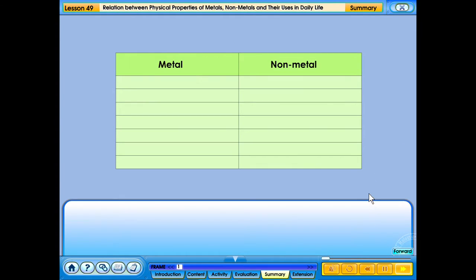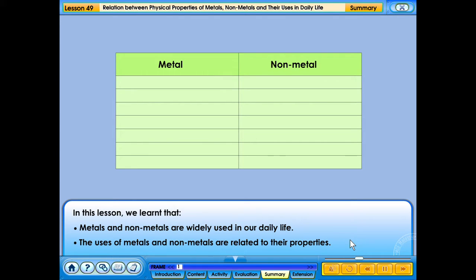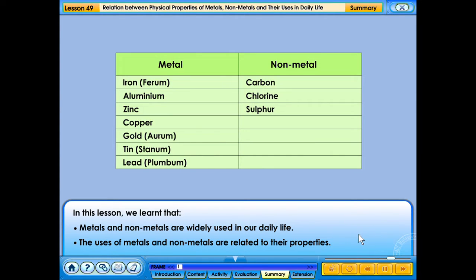In this lesson, we learnt that metals and non-metals are widely used in our daily lives. The uses of metals and non-metals are related to their properties. Click the example of metals and non-metals to learn their uses.